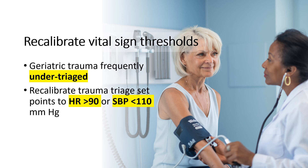Geriatric trauma patients are frequently under-triaged, resulting in increased mortality rates. Geriatric blunt trauma patients warrant increased vigilance despite normal vital signs on presentation. Trauma triage set points of heart rate above 90 or systolic blood pressure below 110 mmHg should be considered in geriatric blunt trauma patients.